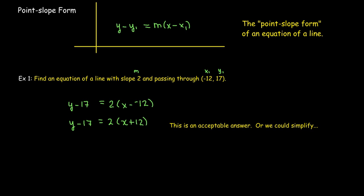Just for practice, let's go ahead and do that. We'll remove the parentheses using the distributive property. I'll add 17 to each side now, and then I'll solve it for y. y equals 2x plus 41.